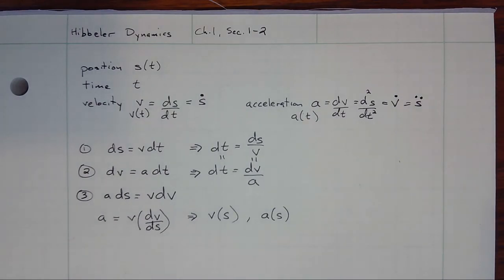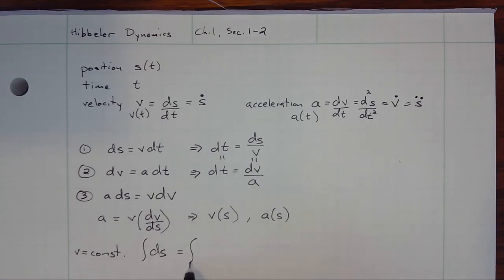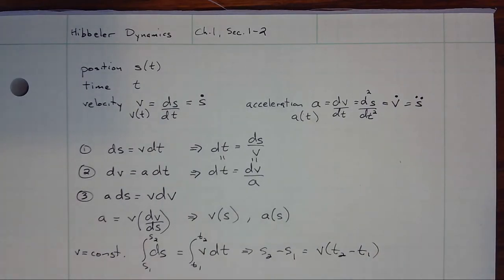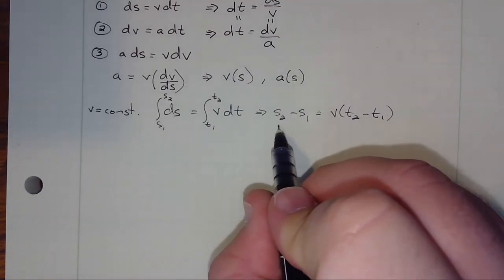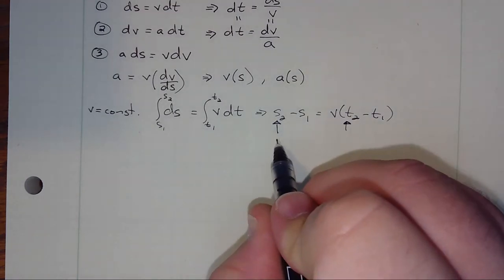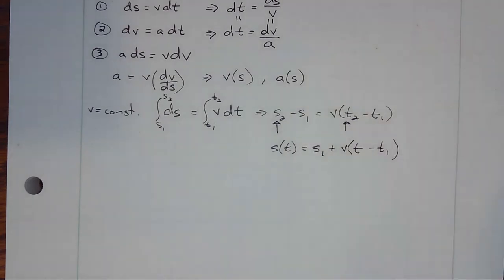Now these expressions, if we start integrating them, give rise to the kinematic expressions we're used to. For example, if we look at velocity being constant, then integrating both sides: the integral of ds equals the integral of v dt. We'll write this with bounds, because we always do definite integrals here. This gives rise to the expression s₂ minus s₁ equals v times (t₂ minus t₁). We can also take one of these points as a variable and the other as an initial condition, writing s(t) equals s₁ plus v(t minus t₁). This is just the position equation from physics.